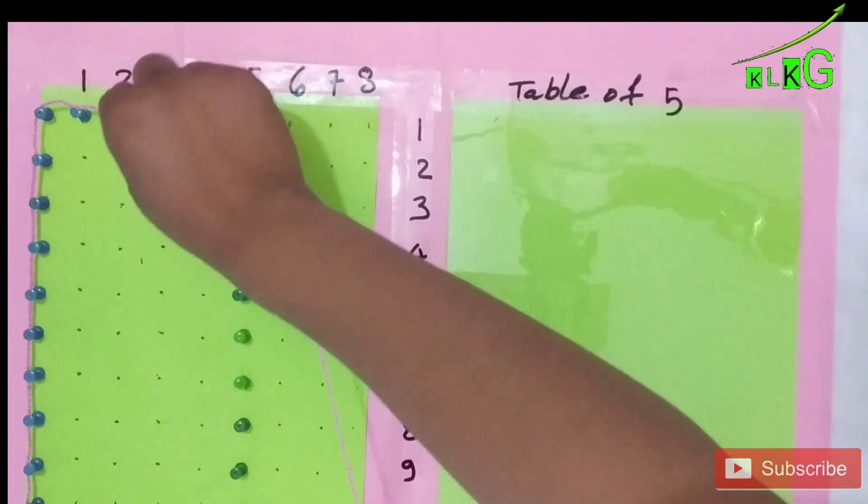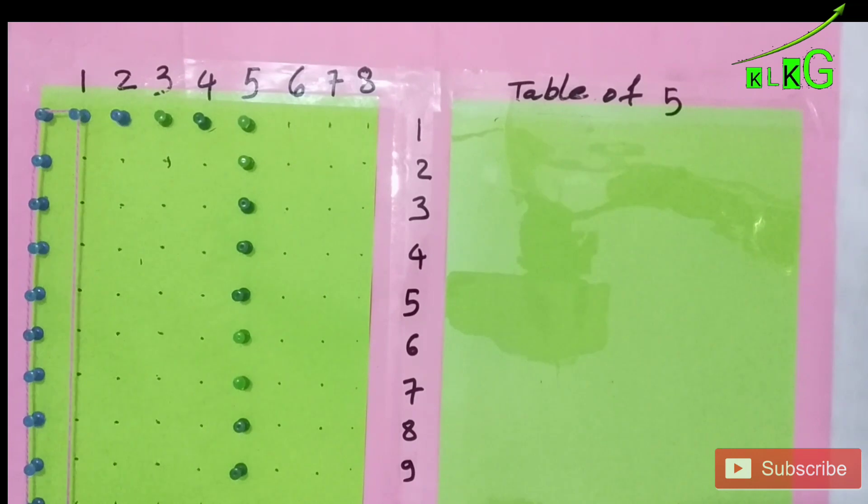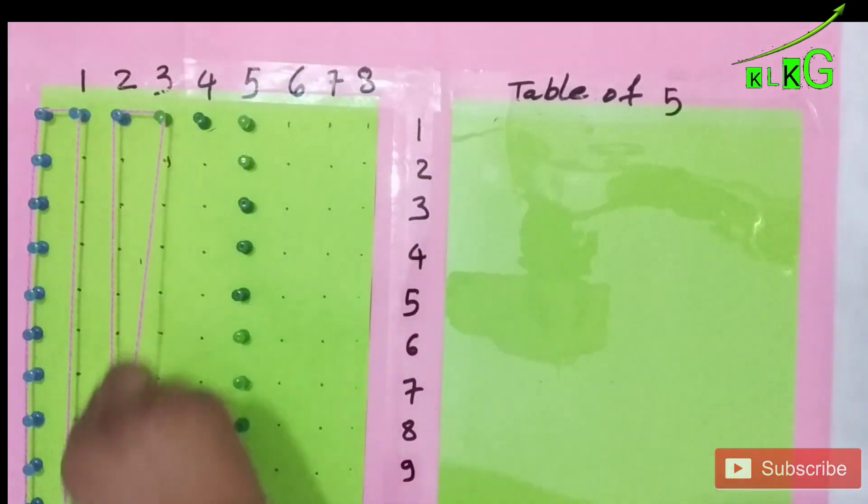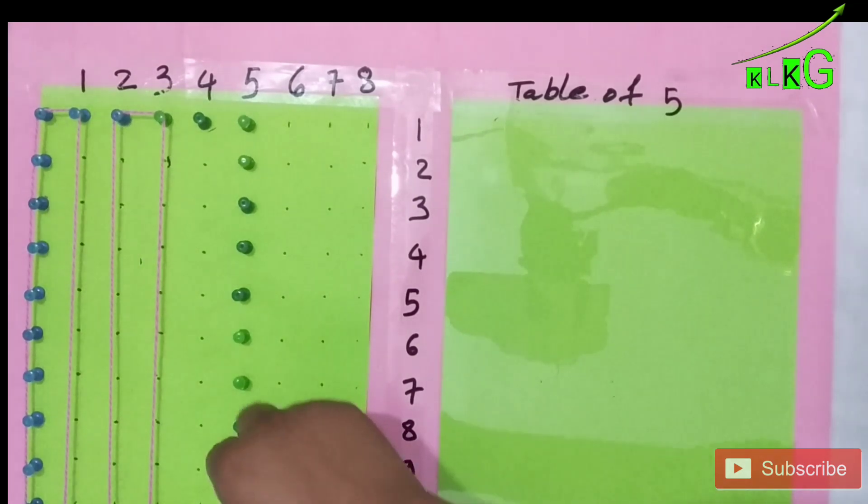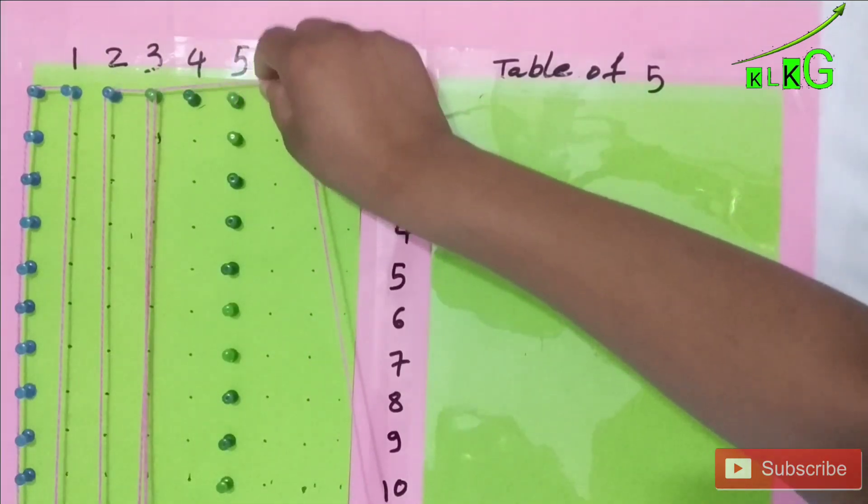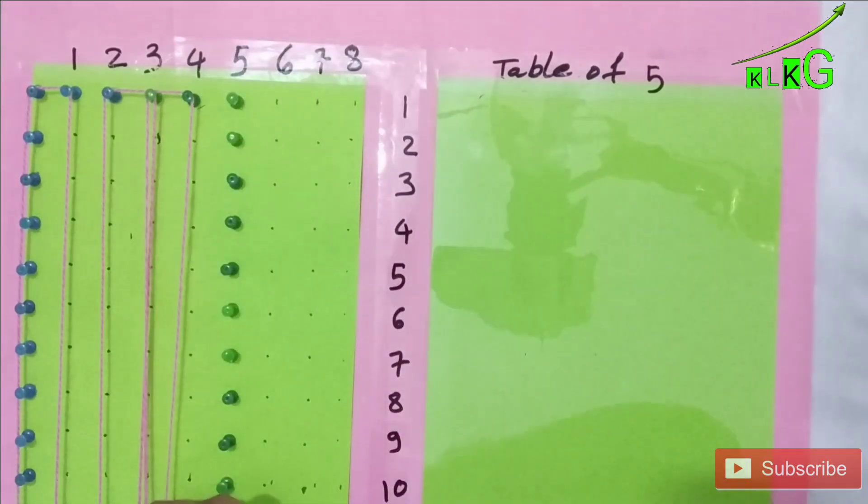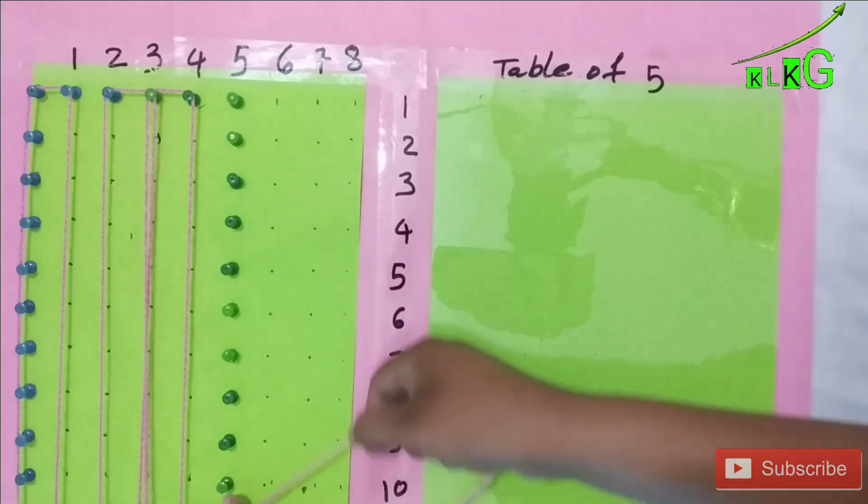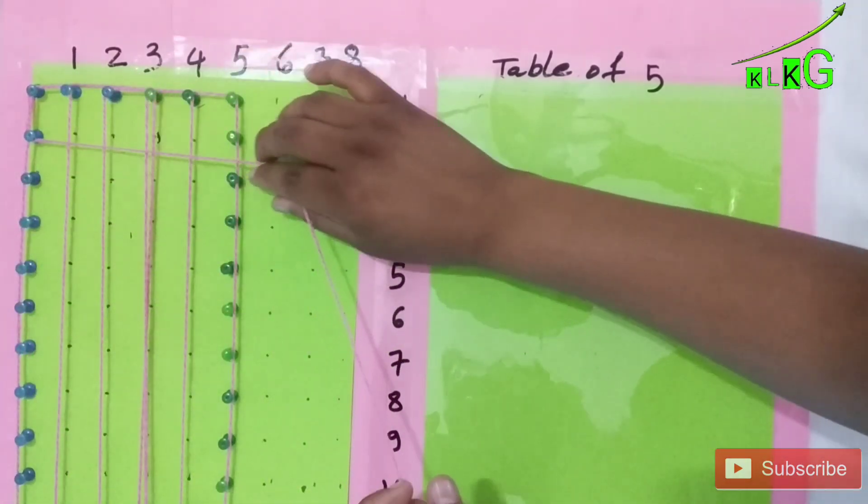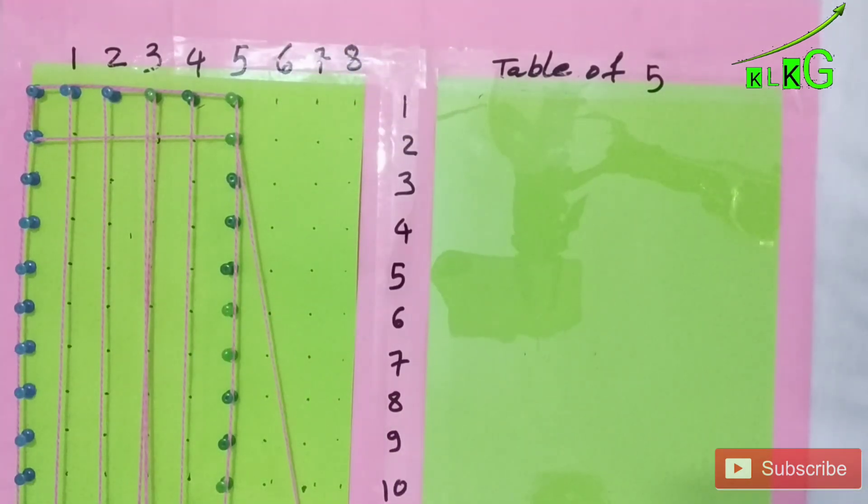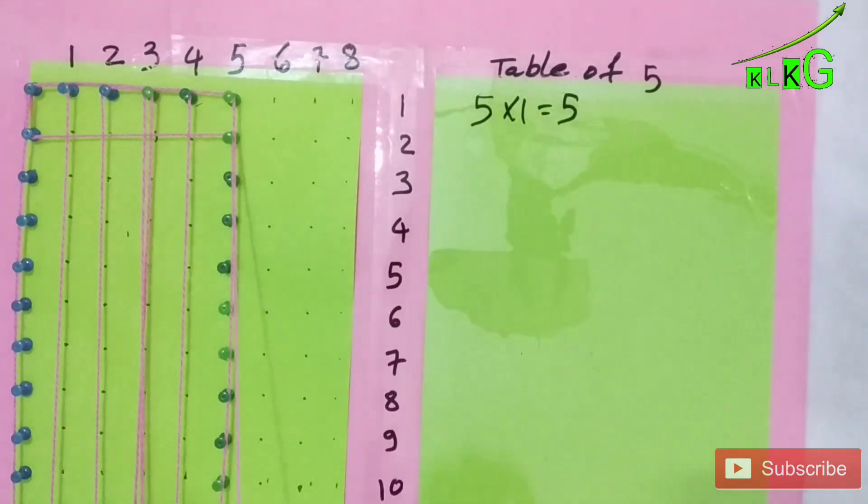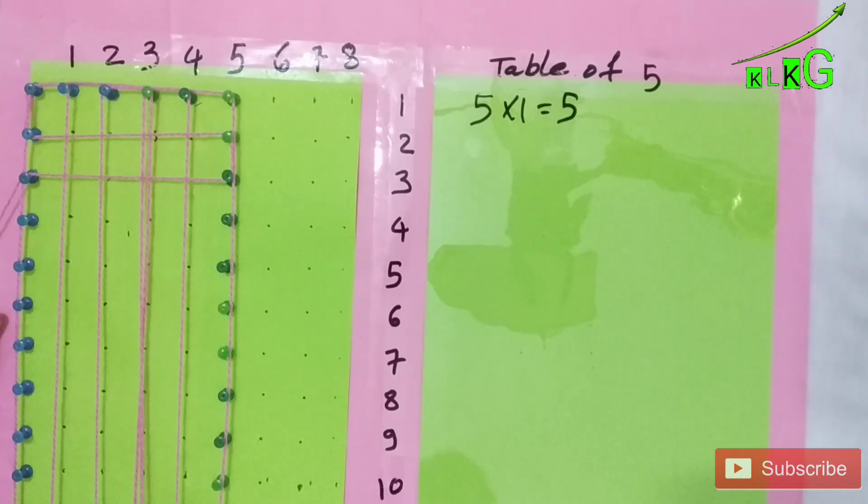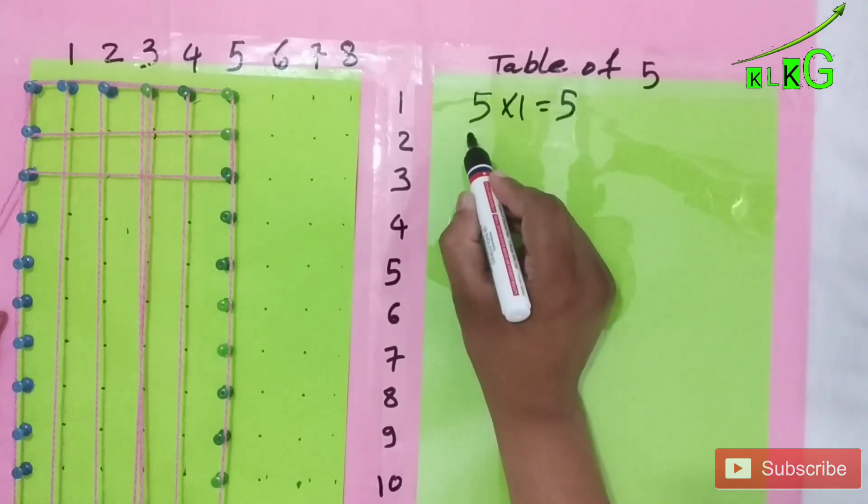So five times two is ten and so on. Like this we can make table of five or any table from here. We can make any table from one to eight tables.